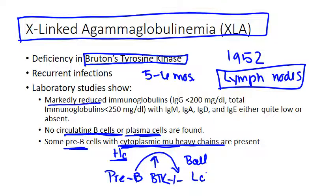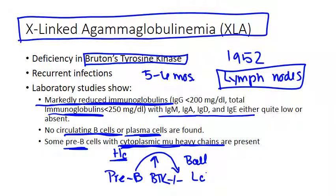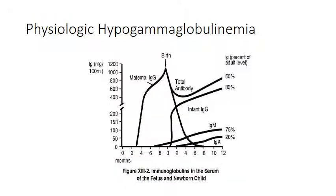Lab studies will show markedly reduced immunoglobulins — less than 200 mg/dL total IgG and less than 250 mg/dL total immunoglobulins — with all isotypes very low or completely absent. The genetic defect is linked to the X chromosome at position Xq22, so it's sometimes called Xq22 deficiency, but essentially it deletes the BTK gene. There's not a lot we can do, but you can give antibiotics, intravenous gamma globulin, and chest physiotherapy.